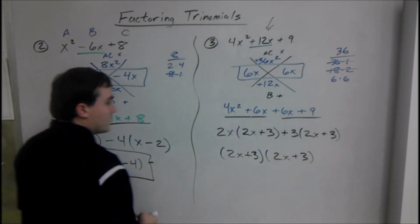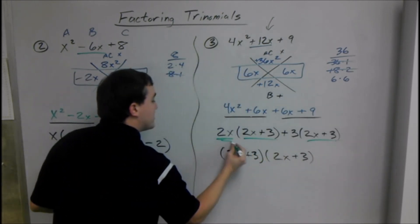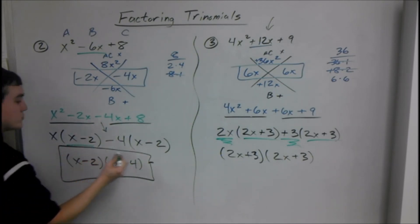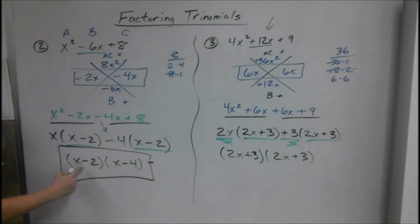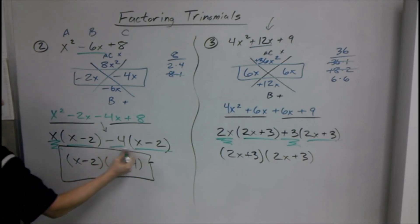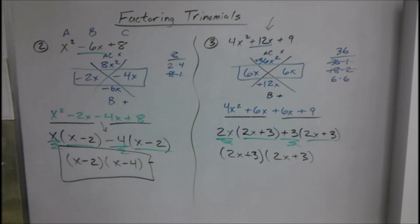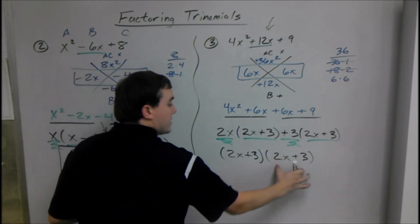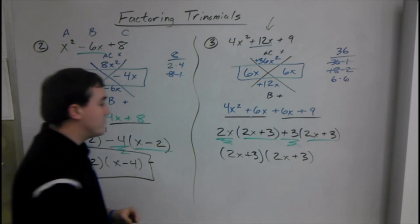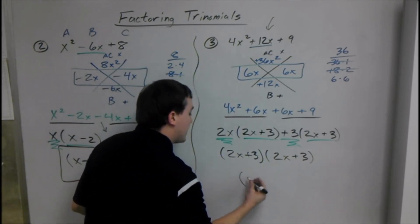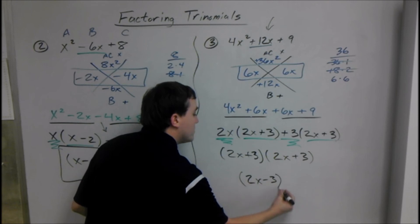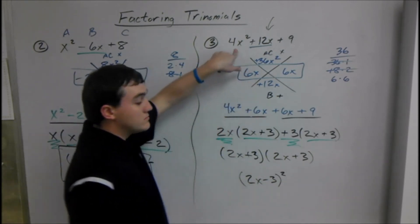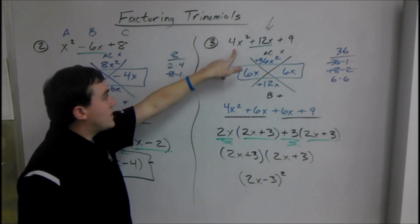Everything on the inside goes in one, everything on the outside goes in the other. Same thing we did here. Another way of writing this: whenever you're multiplying something by itself, it's the same as squaring it. So we could just say 2X plus 3 squared. And if you FOIL this out, you should get right back to here. So that's it for today.